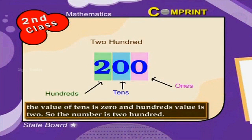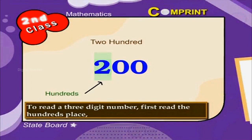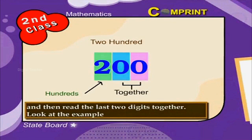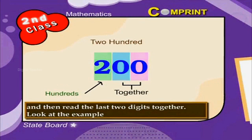To read a three-digit number, first read the hundreds place and then read the last two digits together. Look at the example.